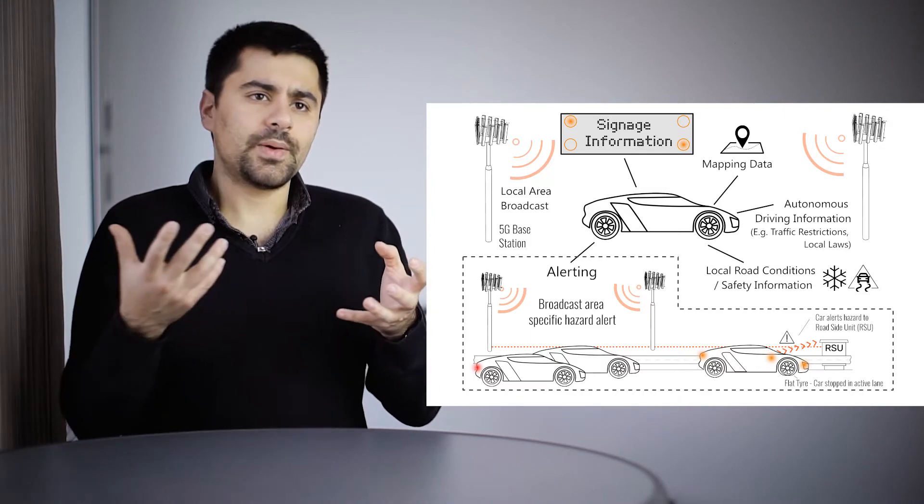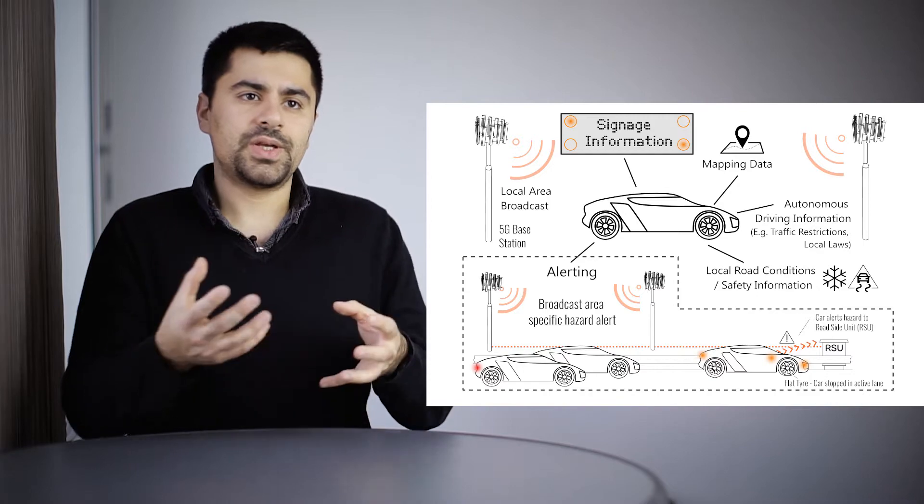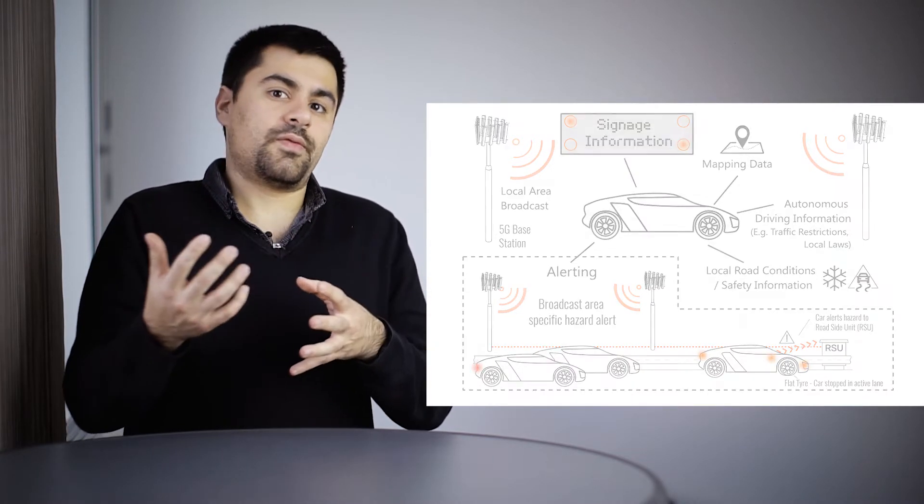The second case is alerting. In this case, we can use broadcast to relay information to vehicles on the road of upcoming hazards. Say, for example, a lane is blocked on a highway. We can let users know that they will need to take evasive maneuvers to ensure that they're as far away from the hazard as possible.